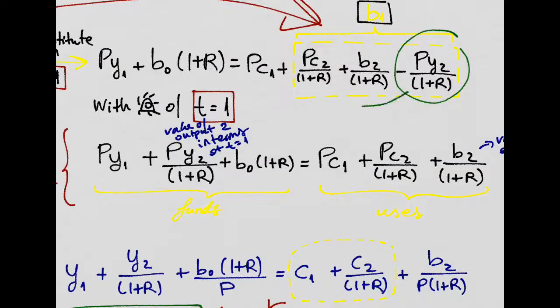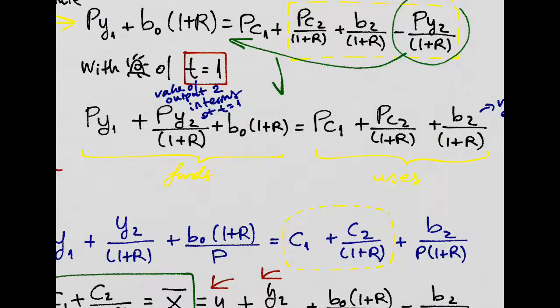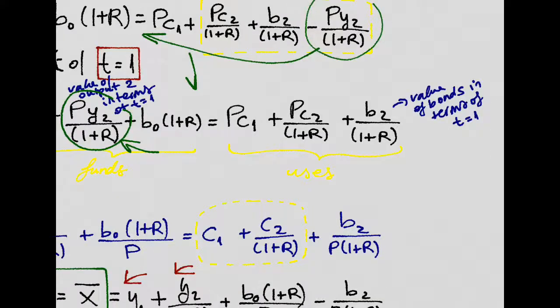And now we take that over there, and we get this new expression, which will be the nominal two period budget constraint. B1, the value of output today times the value of output of next year in terms of today. Same thing for consumption.